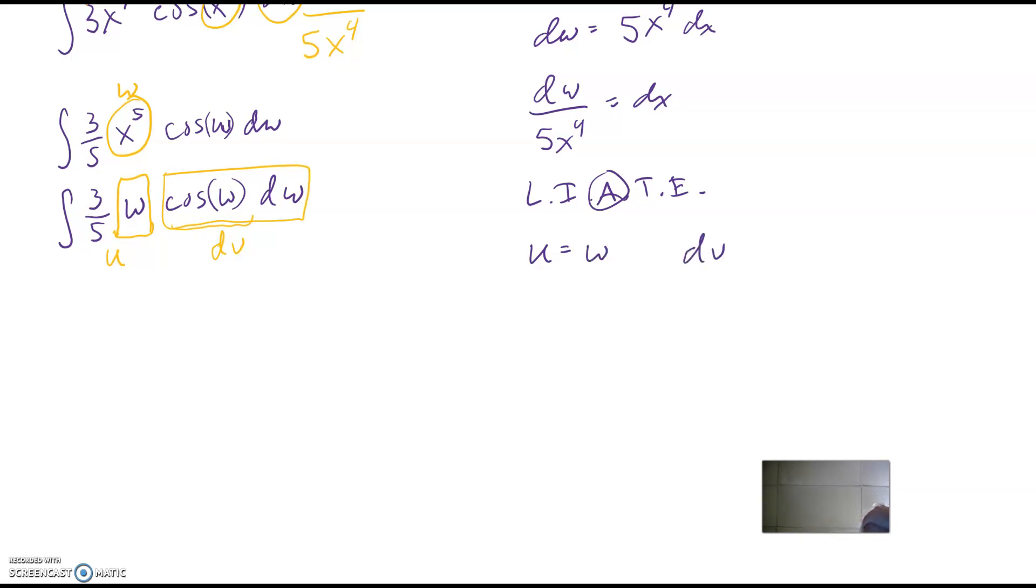And then my dv is cosine w times dw. All right, now, du is just one times dw. And then dv, I got to do the antiderivative, and I get v equals sine of w. Because derivative sine is cosine.